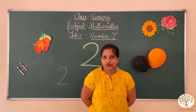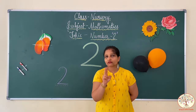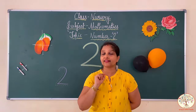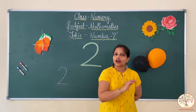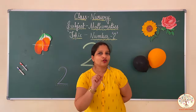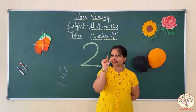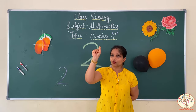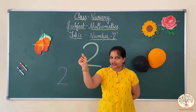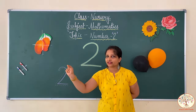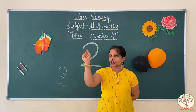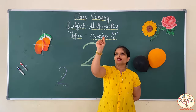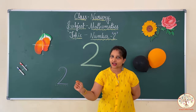Now I will teach you how to write number 2. First we will learn in the air, then on the sand, and then on our slate. Join your pointer finger and thumb like this and put it in the air. Move your finger with me — number 2 is like a curve and a sleeping line.